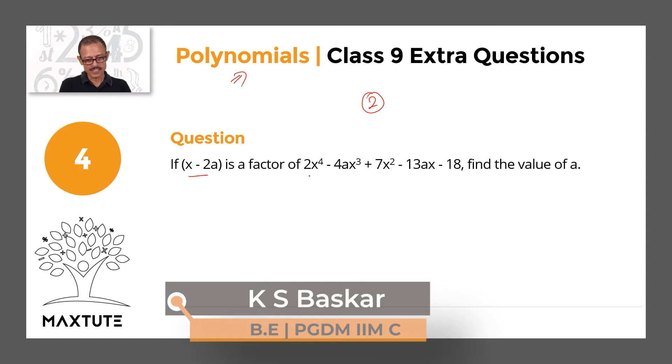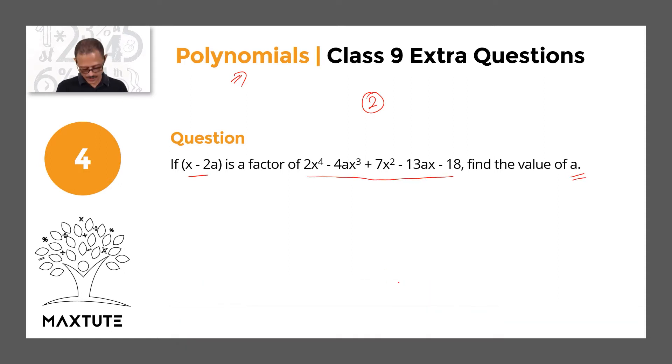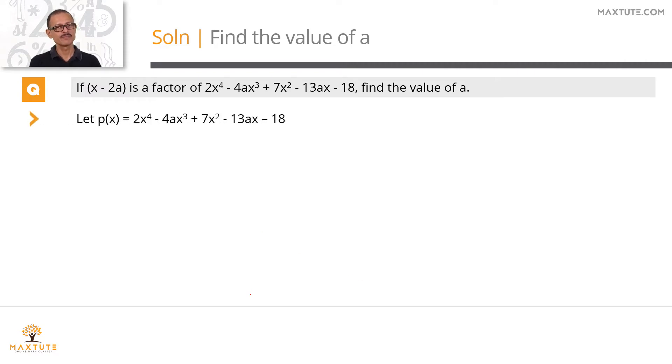If x-2a is a factor of the given polynomial, we need to find out the value of a. Let's say this polynomial is equal to p(x). By factor theorem, if x-2a is a factor of this polynomial, then 2a will be a zero of this polynomial.